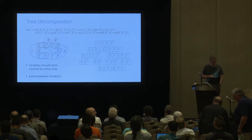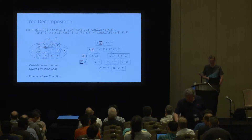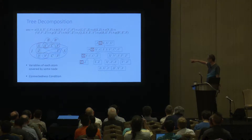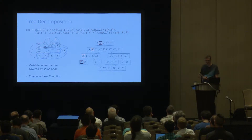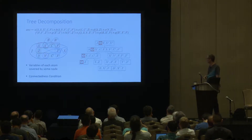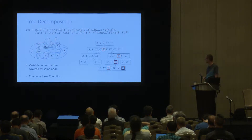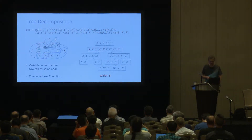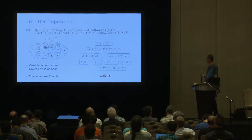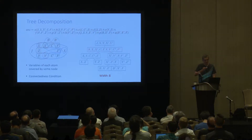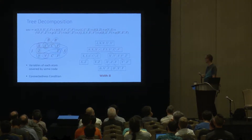The second condition that tree decompositions have to satisfy is the so-called connectedness condition: bags which share a variable have to occur in a connected sub-tree of the decomposition. For example, here we have the nodes with the X variable, here the nodes with the F variable — we see that the nodes are connected. The width of a tree decomposition is the maximum size of the bags minus one. Here the maximum bag has size nine, so the width is eight. The tree width of the hypergraph is the minimum width over all tree decompositions.